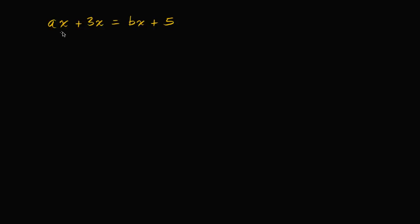We have an equation that says ax plus 3x is equal to bx plus five. What I want to do together is to solve for x, and if we solve for x, it's going to be in terms of a, b, and other numbers. Pause the video and see if you can do that.